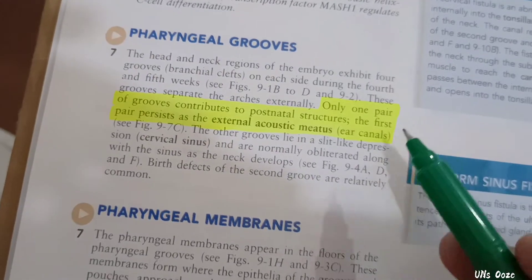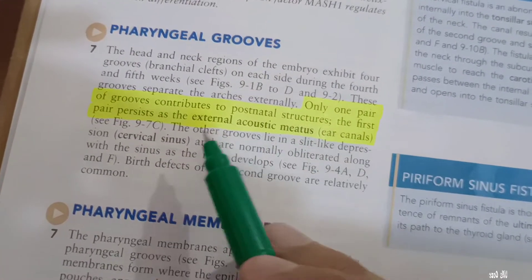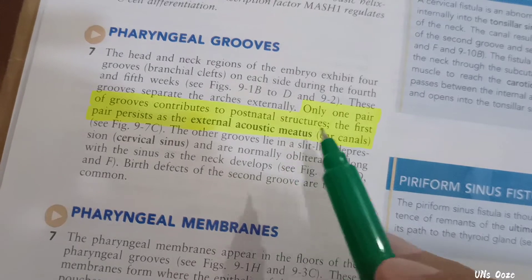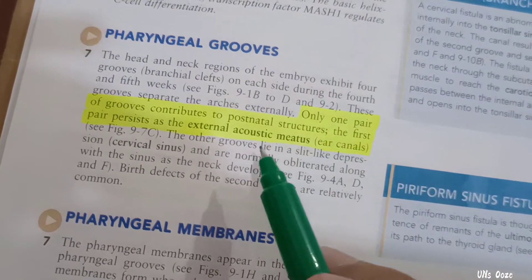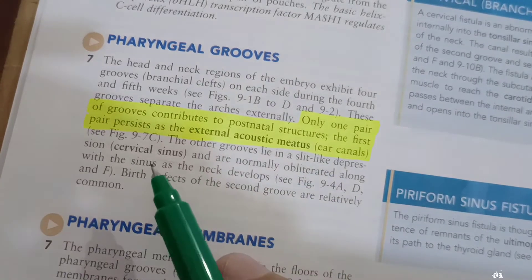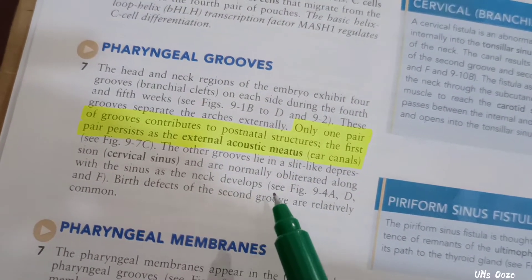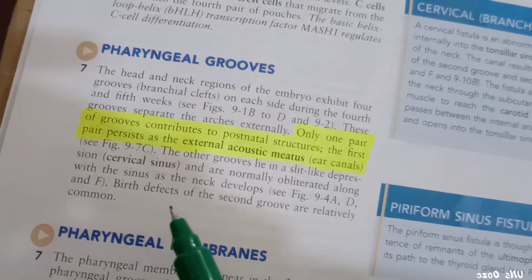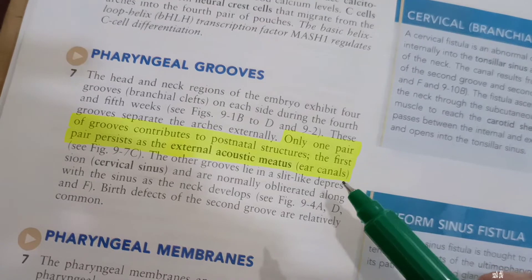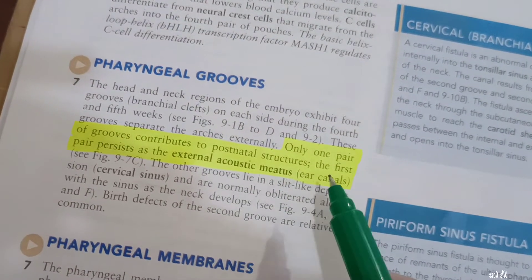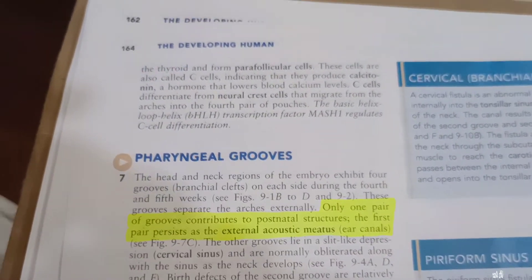For pharyngeal grooves: only one pair of grooves contributes to postnatal structure. The first pair gives the external acoustic meatus. The other grooves lie in a slit-like depression called the cervical sinus and are normally obliterated as the neck develops. Defects of the second groove are relatively common. So only the first groove gives the external acoustic meatus; the other grooves do not contribute to structure.